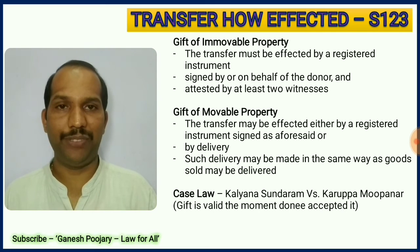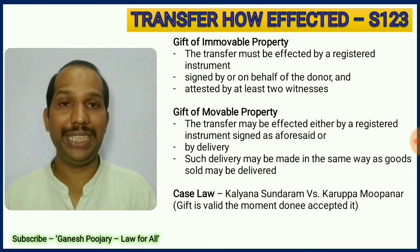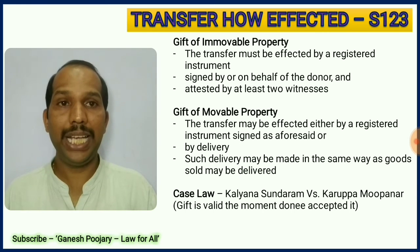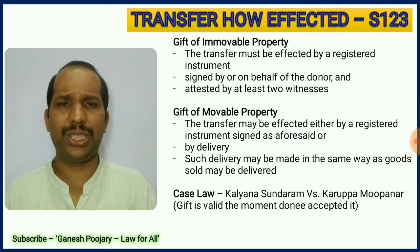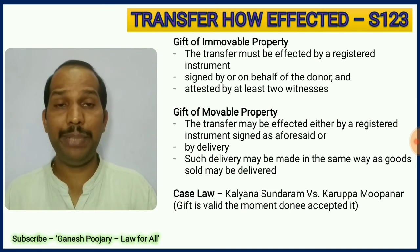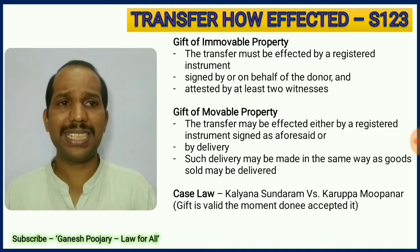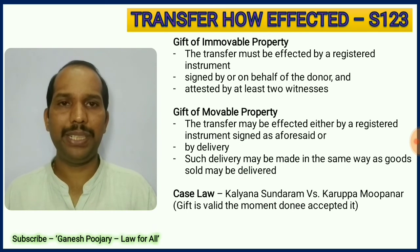Section 123 discusses how to transfer a gift. There are two types: movable property and immovable property. For immovable property, there should be a registered instrument signed by either the donor or someone on behalf of the donor, and attested by a minimum of two witnesses. In the case of movable property, there is no such strict requirement — it can be a registered instrument or simply a delivery to the person receiving it.